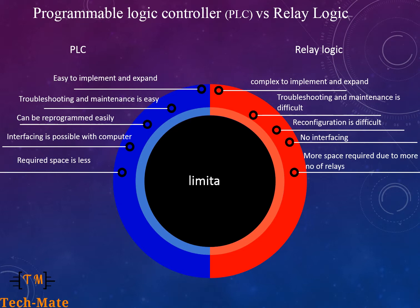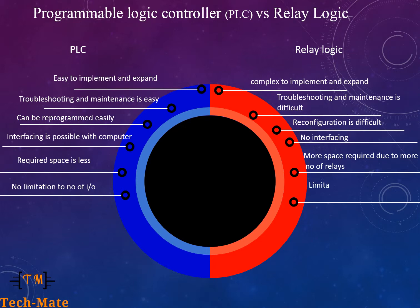Limitations: PLC has less limitations of input and output, supporting up to 10,000. In Relay Logic, the number of inputs and outputs is limited due to complexity.